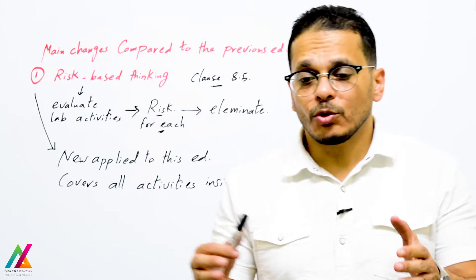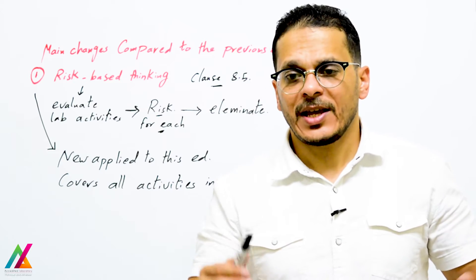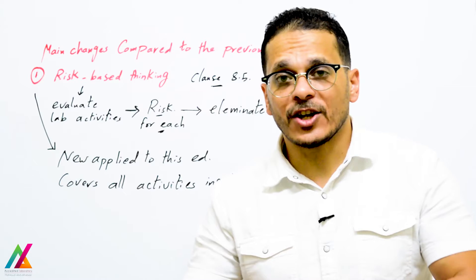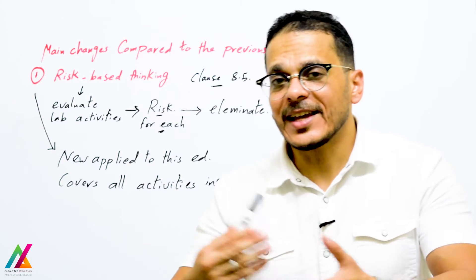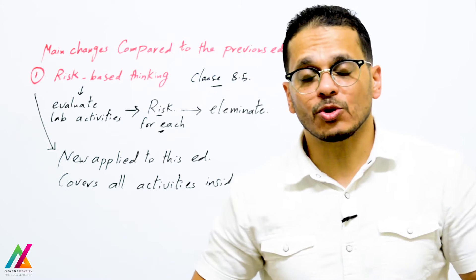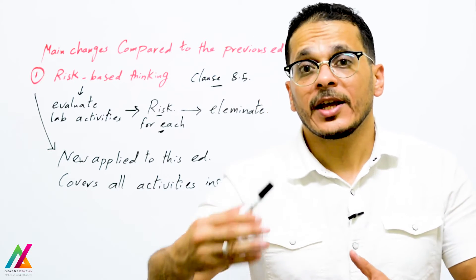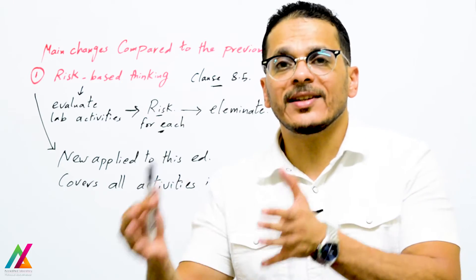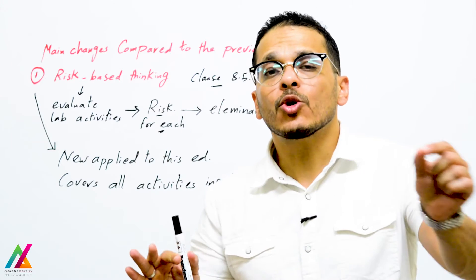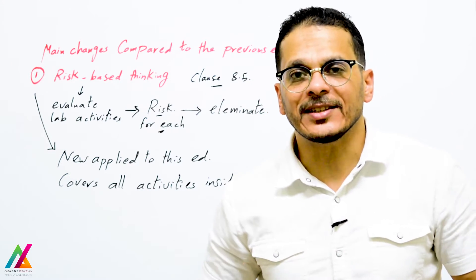If you find any risk that will affect a lab activity, try to eliminate it or build a corrective action to remove it. After that, you will improve results and increase the effectiveness of the management system. Even after you build your system — one, two, or three years later — if you find any new risk, you raise it as a non-conformity, make a corrective action, solve the problem, and ensure it does not happen again.